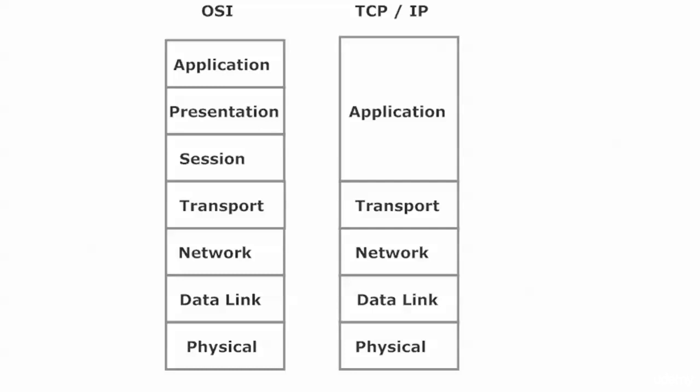You can see why we like this version so much. The only real difference between the two models is that the application layer of the TCP/IP model maps exactly to the top three layers of the OSI model — application, presentation, and session. After that, it's an exact one-to-one mapping, and they even use the same names. The transport layer on the TCP/IP model does the exact same thing as in the OSI model, and so forth.